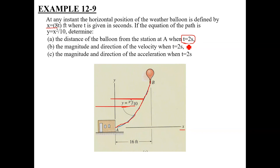We will see both methods in this example. We will also use y as a function of time, and we will also use chain rule. So you have a particle travelling along this curved path. It is given that x is a function of time and y is a function of x. You need to find the position, velocity, and acceleration of this particle after 2 seconds.